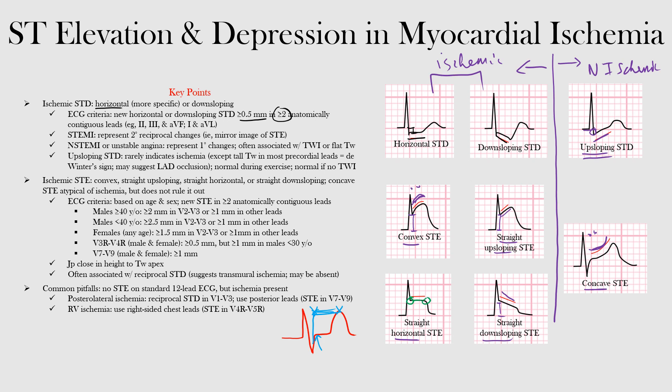Ischemic ST elevation is often associated with reciprocal ST depression, which strongly suggests transmural ischemia. However, reciprocal ST depression may not always be present. This can occur when no lead has an opposite angle of observation to the lead with ST elevation, when the injury currents are not strong enough to be detected in opposing leads, or when other vectors interfere with the injury currents and prevent detection.